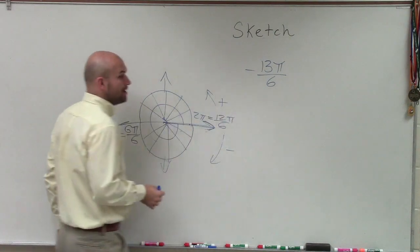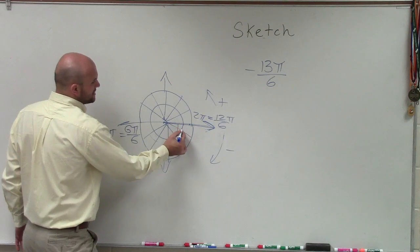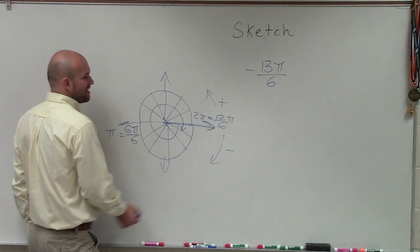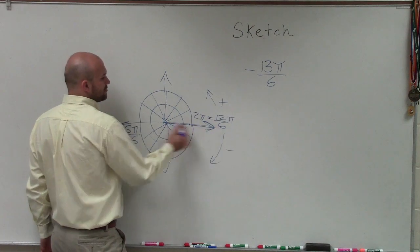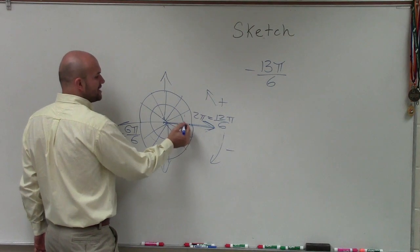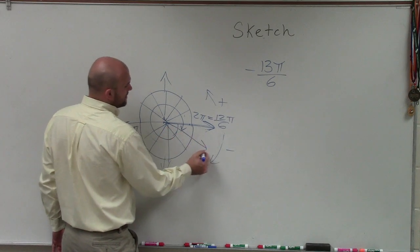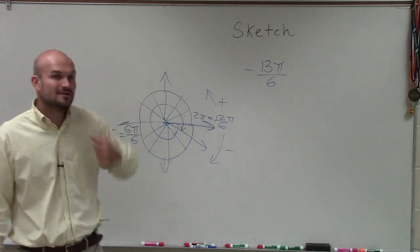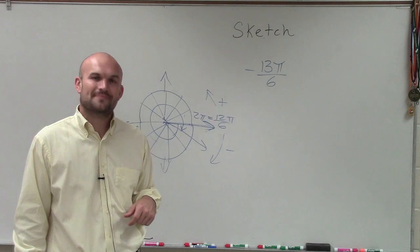Now I just need to go one more π, or one more portion down, or part, to get me to negative 13π over 6. So therefore, if I start with my initial side here, rotate my angle all the way around one revolution, and then go one more down, that will be my terminal side for my angle, negative 13π over 6. Thanks.